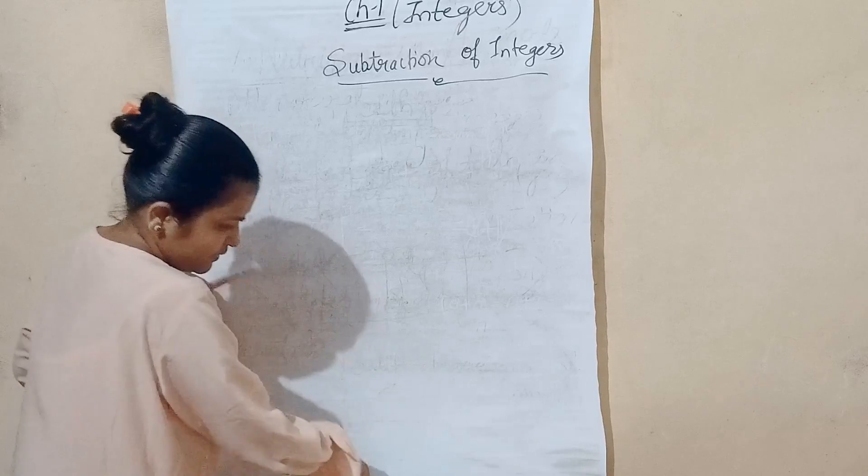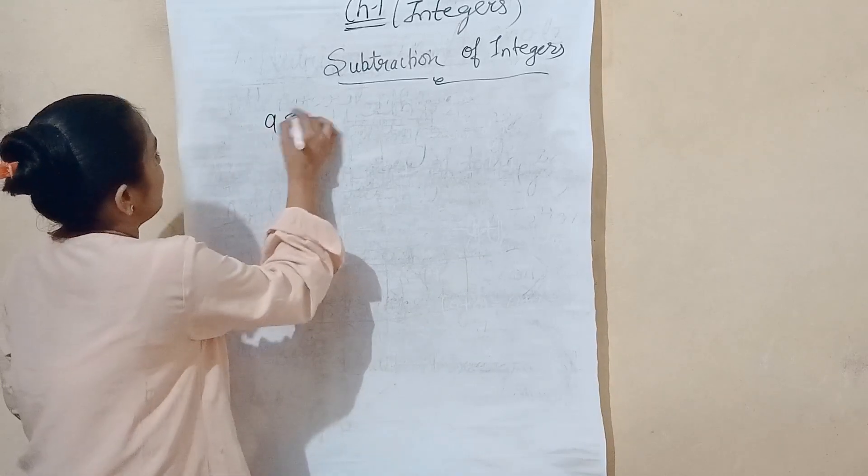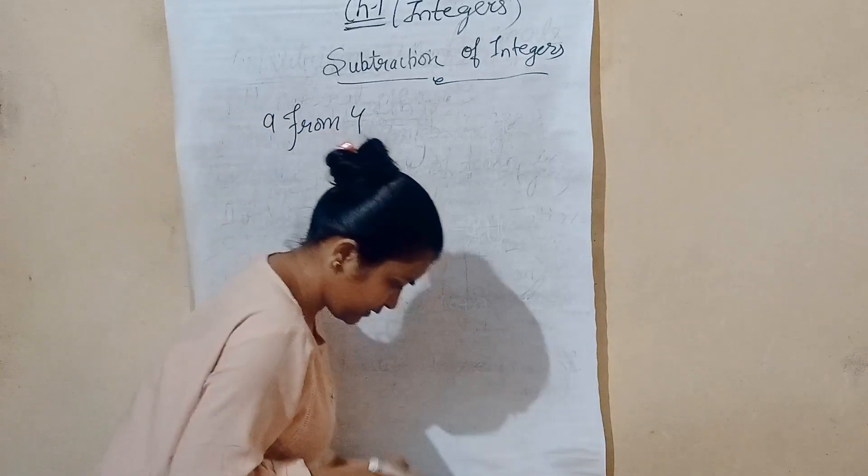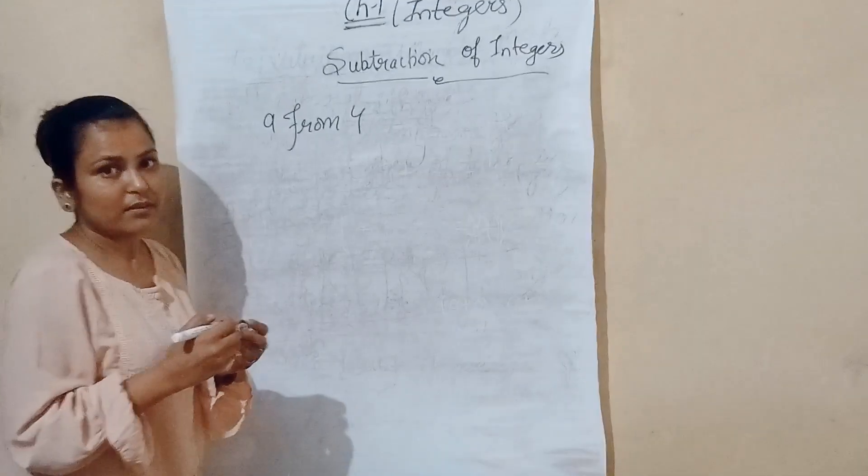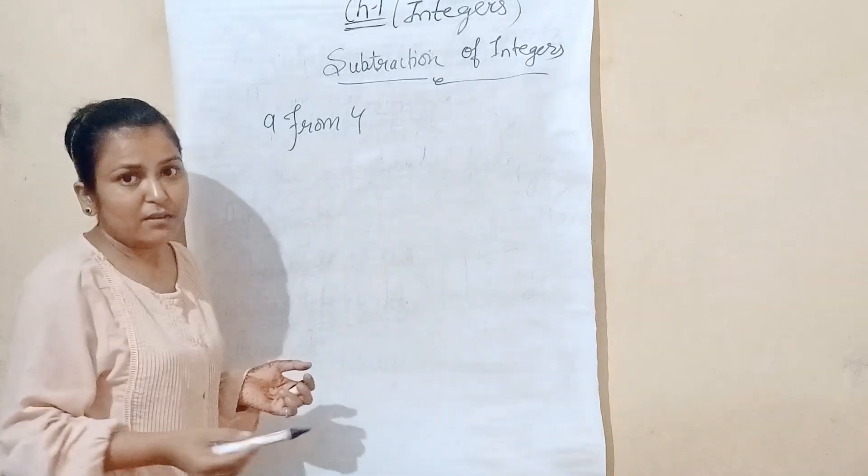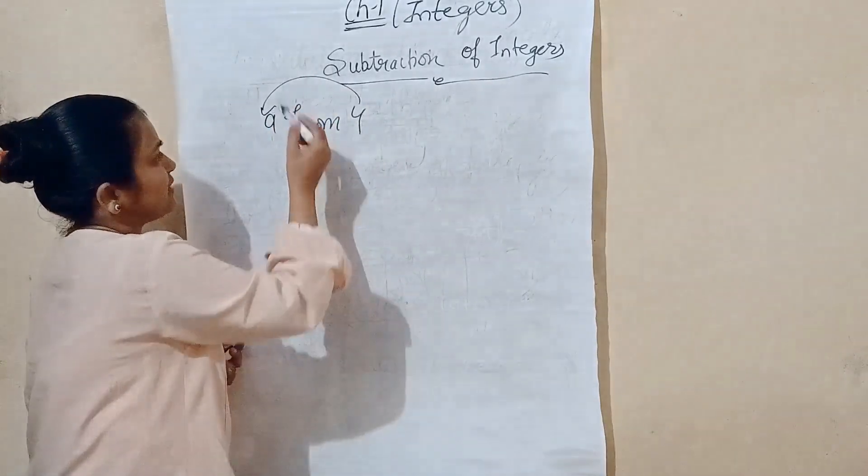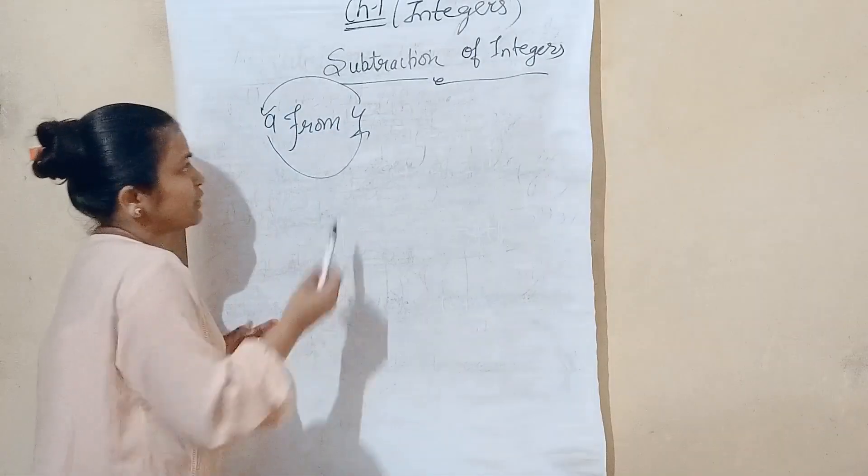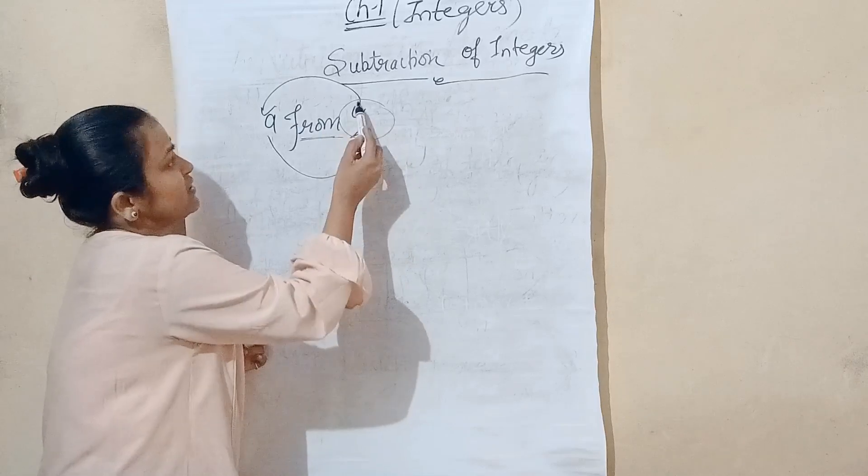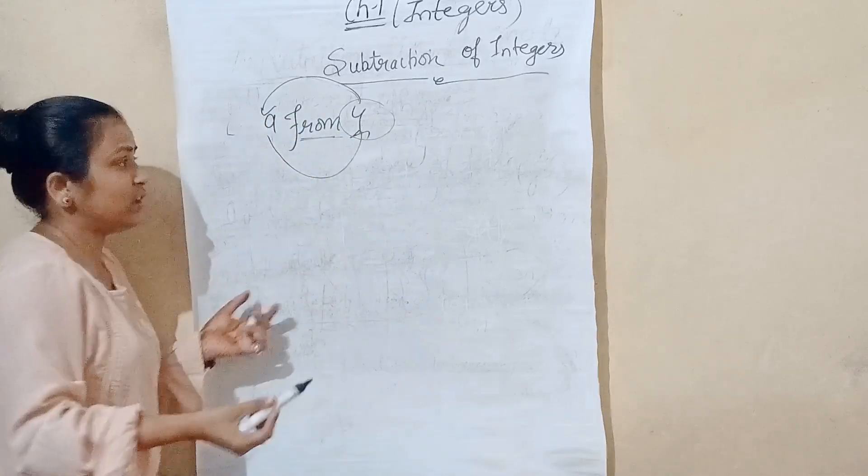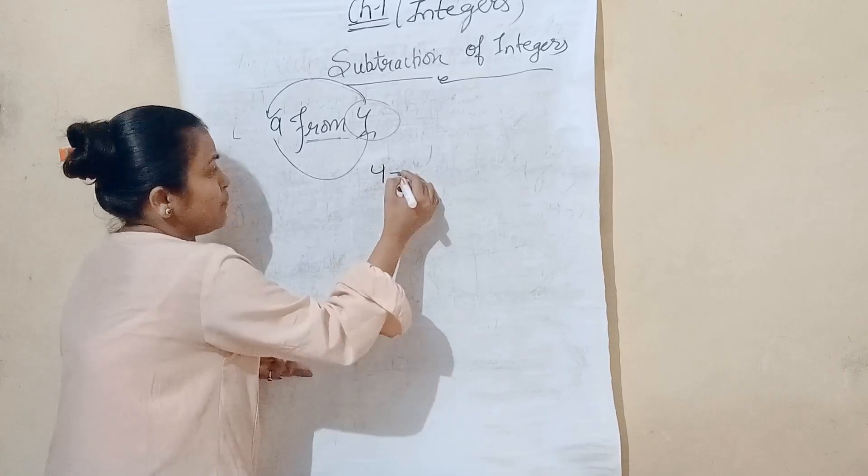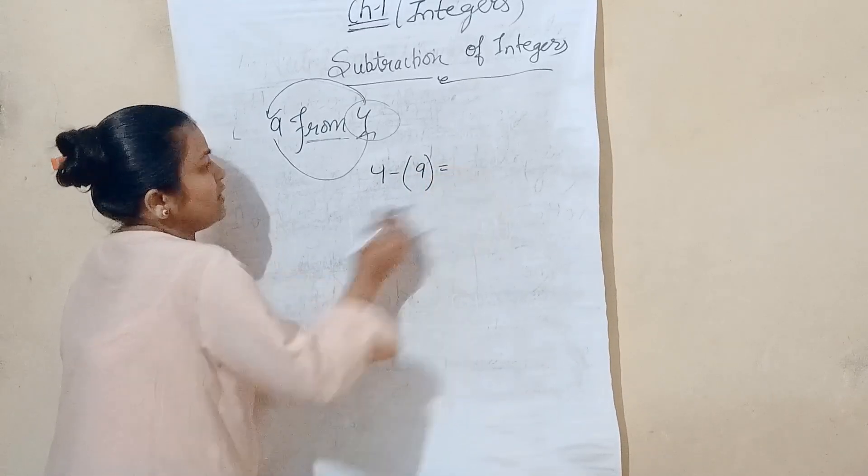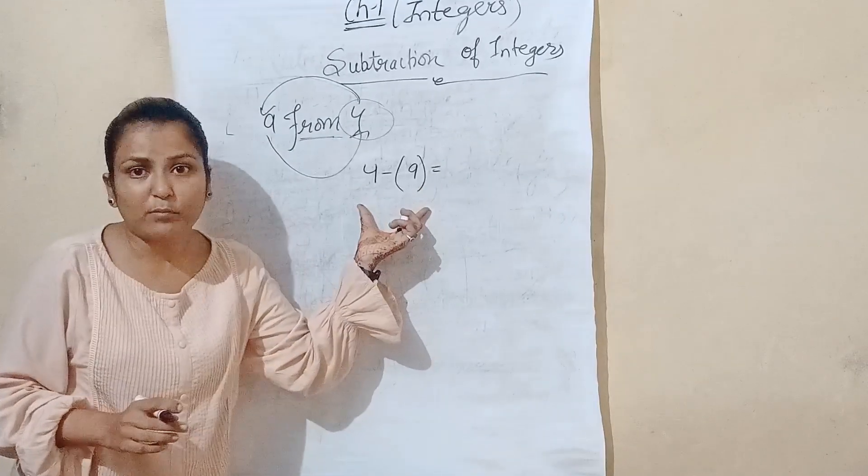How will it be? 9 from 4. We have 4 minus 9. We have to subtract, 9 from 4. This is our question. Now, we will also make this question. How will it solve?